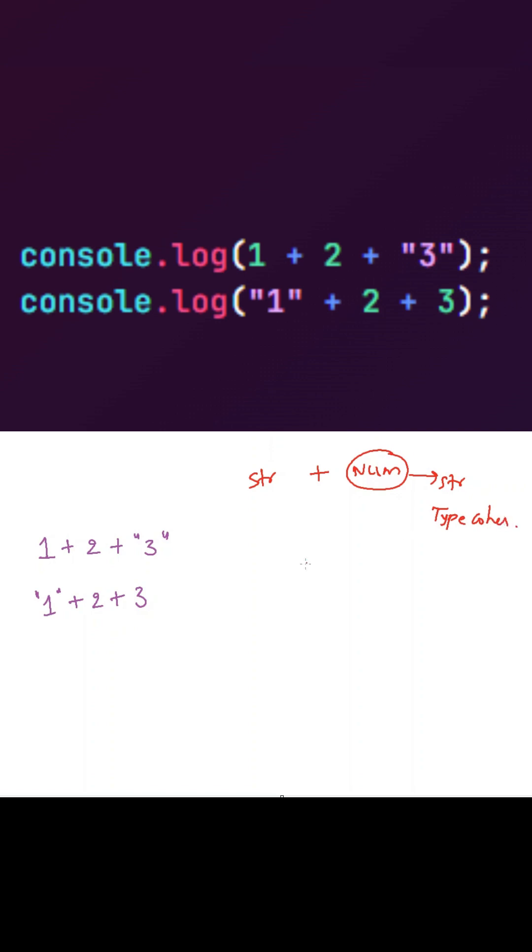And the other point is addition associativity will be from left to right. So always go from left to right.